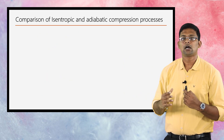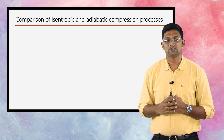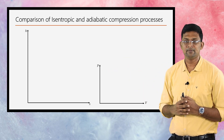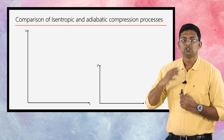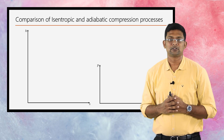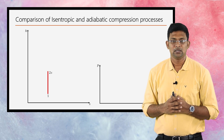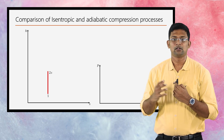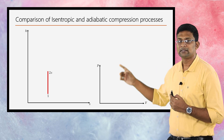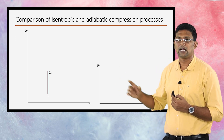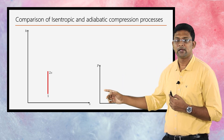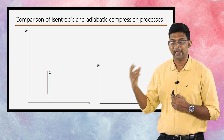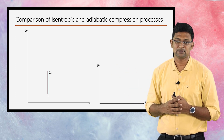Now let us discuss about the compression process. Again, we are starting with the h-s and p-v diagrams. For the isentropic process, being isentropic, the entropy value remains constant, so it will be a straight vertical line with starting point 1 and end point 2s, where 's' stands for isentropic. The blue one represents the adiabatic process, again starting with 1 and ending with 2a.